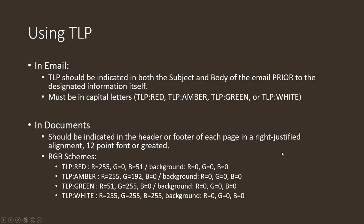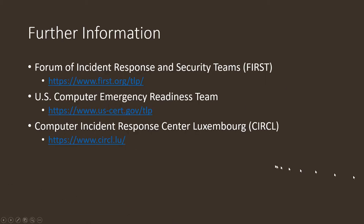In documents, the TLP label can be in the header or footer, but typically it should be in the header, right-justified, in 12-point font or greater. There are also specific RGB color schemes — for TLP Red, it's R:255, G:0, B:51. For further reading, the first resource listed is an excellent page with a lot of good information, as is US-CERT. Other CERT communities in other countries also have good resources, such as the Computer Incident Response Center in Luxembourg. Feel free to leave any questions in the comments below.